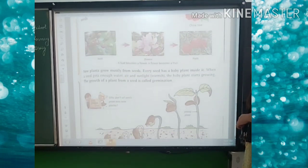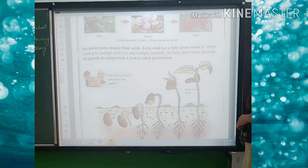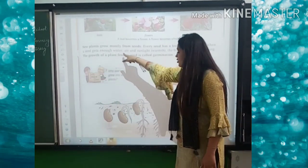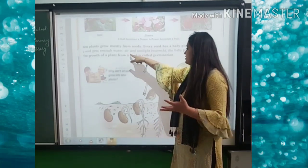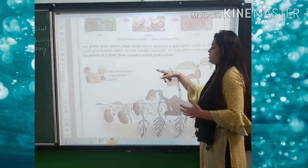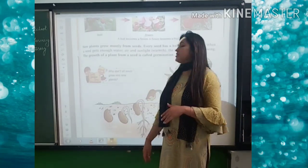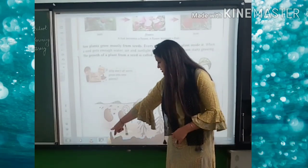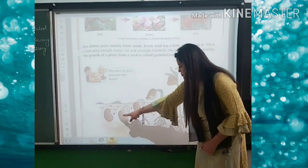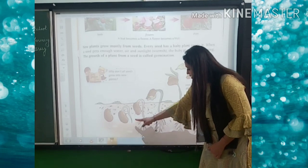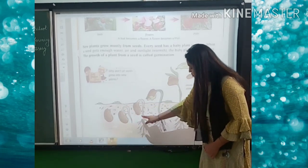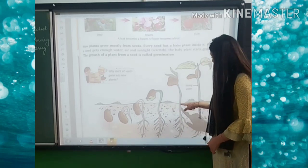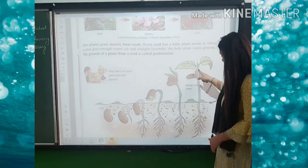New plants grow mostly from seed. Every seed has a baby plant inside it. When a seed gets enough water, the baby plant starts growing. The growth of a baby plant from a seed is known as germination. You can see in the picture: this is a seed — after some time, roots grow downward, then the seedling grows upward into a young plant.